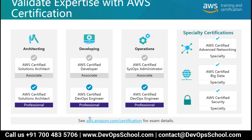DevOps engineer professional is a well-versed thorough professional certification which will give you exposure to a lot of AWS services on both developer-oriented and SysOps-oriented tracks. AWS certified SysOps administrator is also there. Both the certified developer and certified SysOps roles can move to the next step of DevOps engineer professional. Then there are specialty certifications: certified advanced networking specialty, certified big data specialty, and certified security specialty. These will add good credibility to your profile.